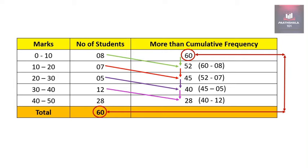Now, how to verify whether the calculation is right or wrong. The last value of more than cumulative frequency should be equal to the last value of frequency given. As you can observe, the last value of more than cumulative frequency is 28, and the last value of number of students is also 28. It's matching, so our calculation is right.